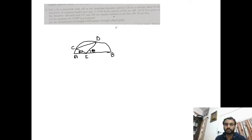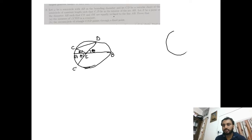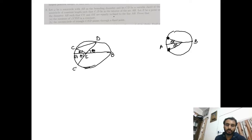We have to prove that angle CED is constant, and that the circumcircle of triangle CED passes through a fixed point. As AB is a diameter, I am making a construction here — completing the circle and extending DE to a point C'. I am calling it C' because this angle is also theta. So C and C' are mirror images of each other, since AB is a diameter.